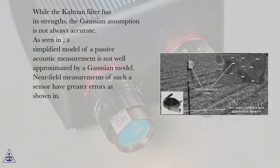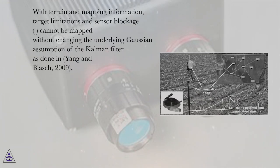While the Kalman filter has its strengths, the Gaussian assumption is not always accurate. As seen in a simplified model, a passive acoustic measurement is not well approximated by a Gaussian model. Near field measurements of such a sensor have greater errors. With terrain and mapping information, target limitations and sensor blockage cannot be mapped without changing the underlying Gaussian assumption of the Kalman filter as done in Yang and Lask, 2009.